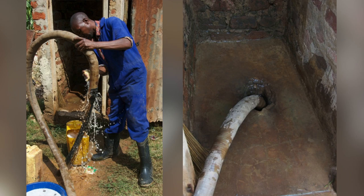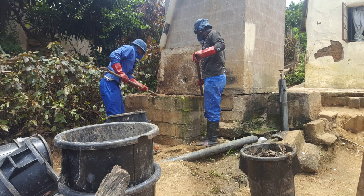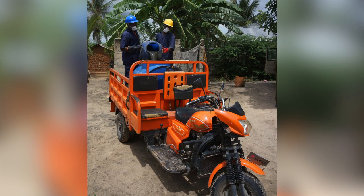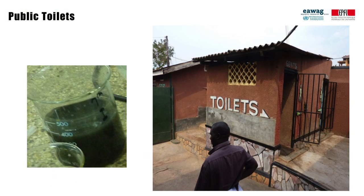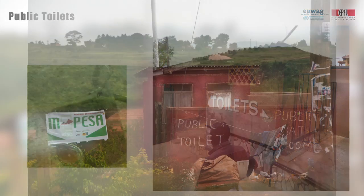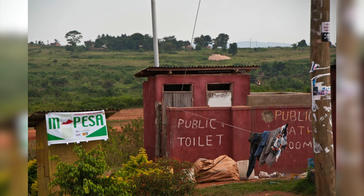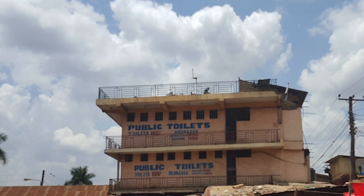This shows the emptying of pit latrines with a vacuum truck, and also manually with shovels and forks, and barrels transported with a motorized tricycle. Fecal sludge from public toilets does not mean a specific type of technology but tends to have different usage and storage times.